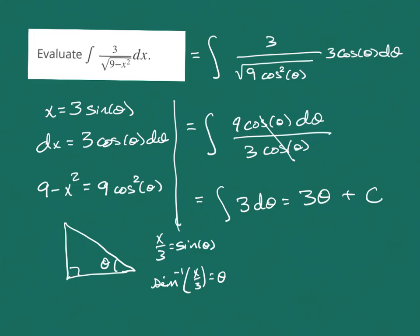And so with that substitution, what do I have as my final answer? I get 3 times the arc sine of x over 3 plus my arbitrary constant.